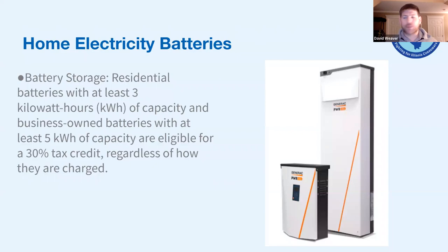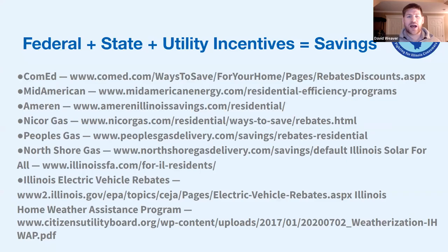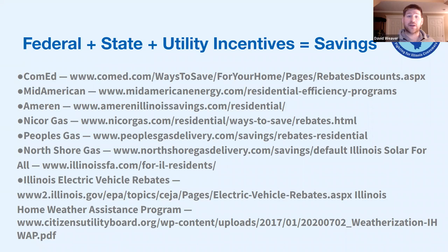There's also a 30% tax credit if you want to install a battery in your home. The key takeaway from all of this is that you can stack all of these incentives — tax credits, rebates, state incentives, and utility incentives. When you add them all together, you can get immense savings while lowering your carbon footprint.